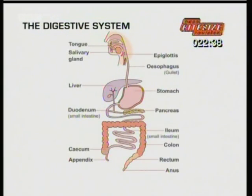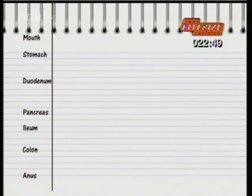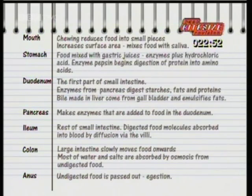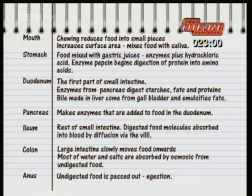If you need some more help, here's a diagram of the human digestive system. You can also find it in the biology section of the GCSE Bitesize website. By now, your completed table should look something like this. Food enters the mouth, where chewing reduces it into small pieces, increases its surface area and mixes it with saliva.